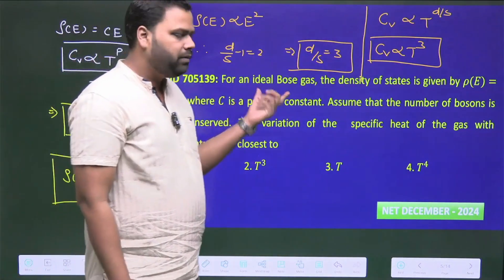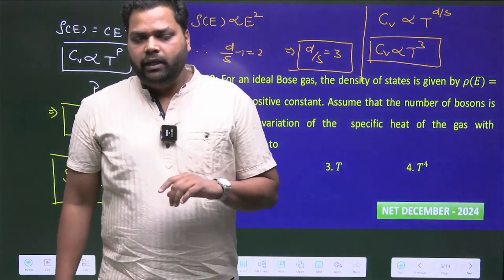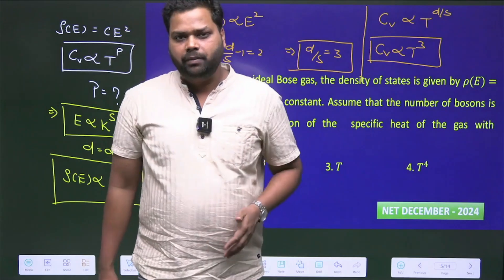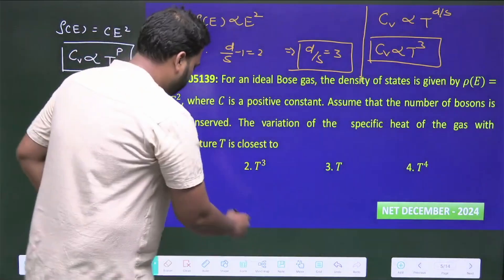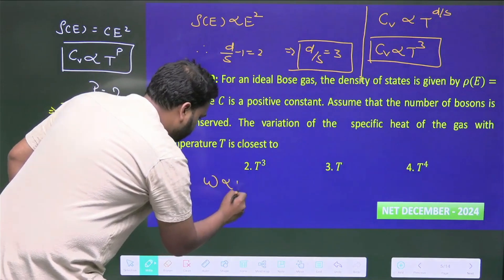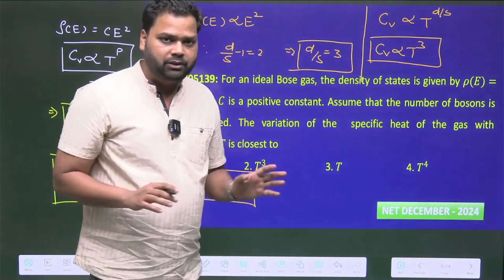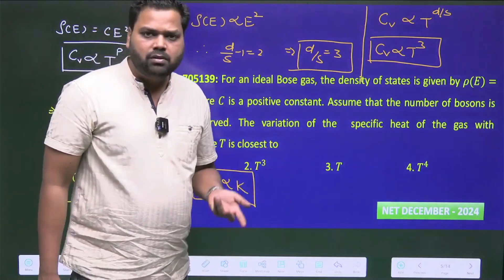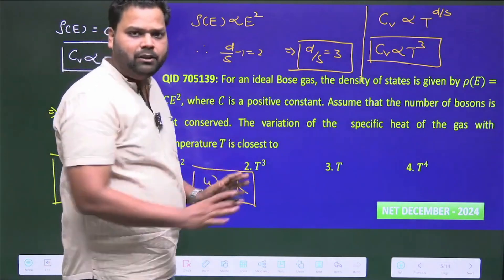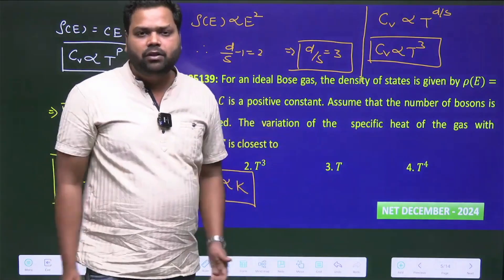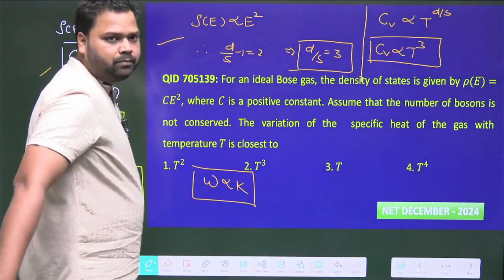One more thing - in the question they are providing information about ideal Bose gas, the bosons. When we discuss the lattice vibration part, the dispersion relation for bosons is Ω proportional to K. This is the dispersion relation for phonons in lattice vibration. Phonons are also bosons, so they follow the same dispersion relation - photons and phonons both follow the same type. No need to go in complete derivation because there are time constraints in the examination. We have to be smart and apply this particular logic.